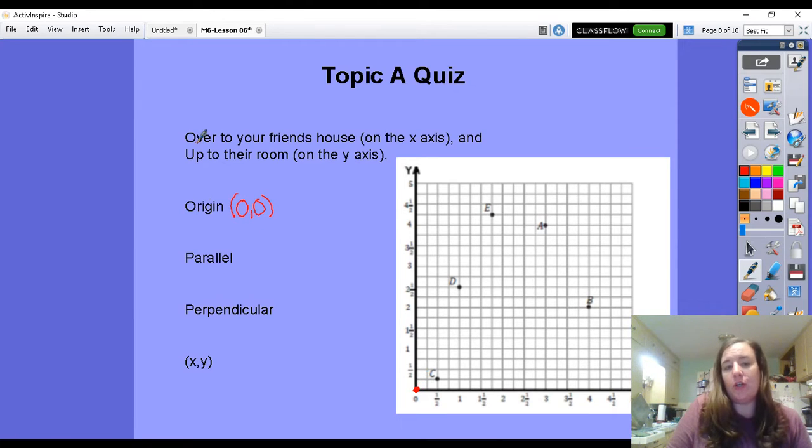So when you start on that origin, you're going to go over to your friend's house and then up to their room. So we travel on the x axis over, and then we travel up on this y axis to find our coordinates.